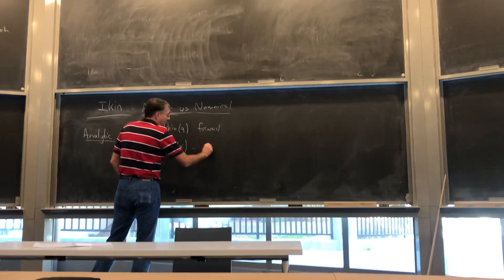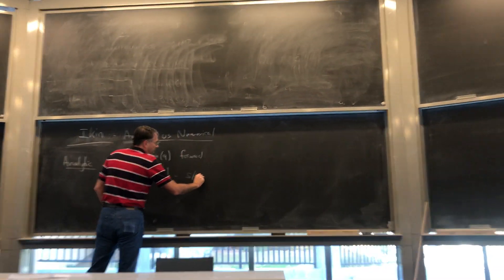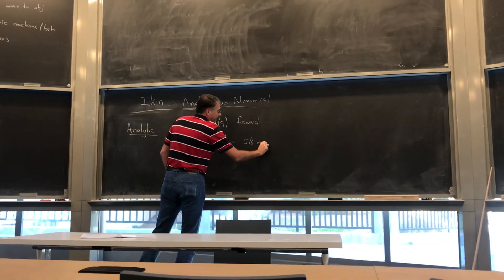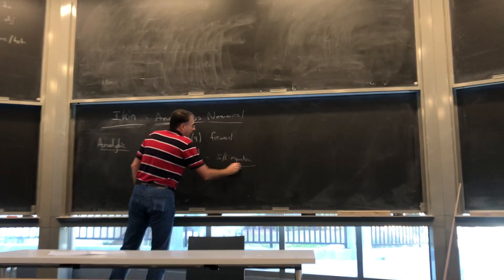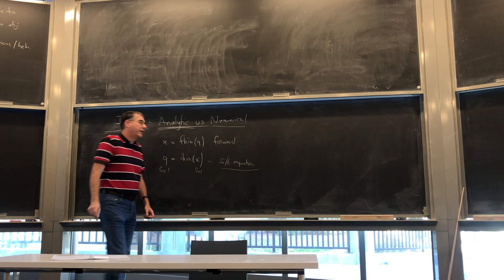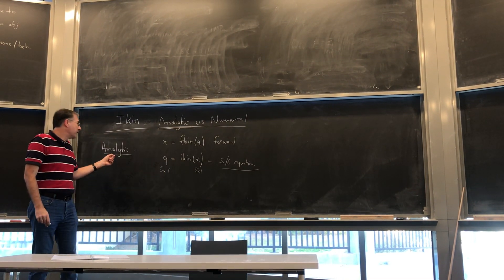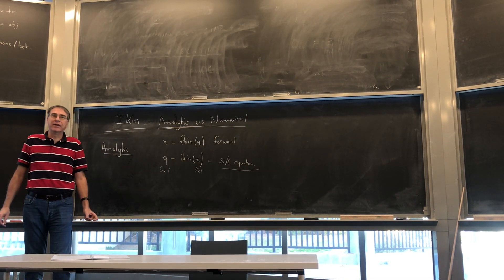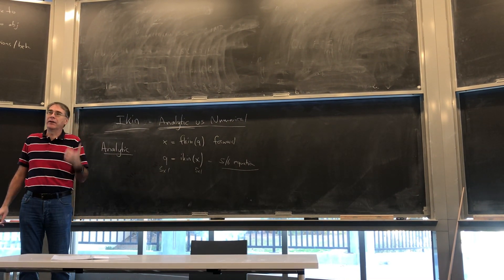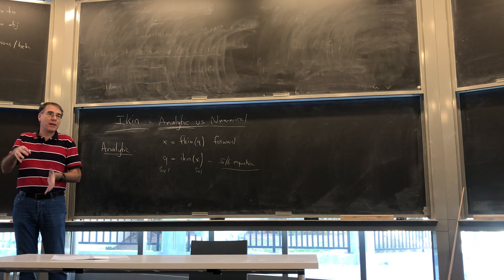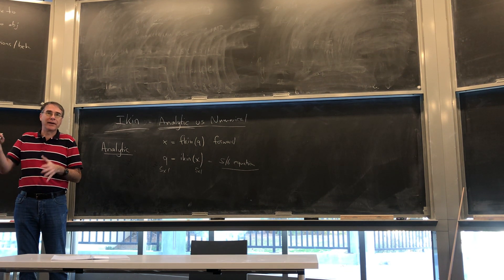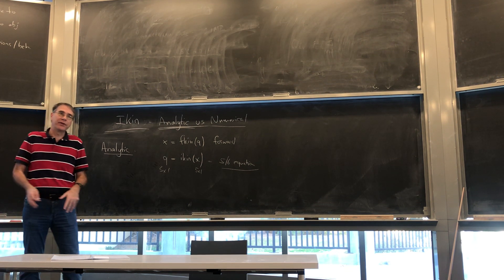Basically, 5-6 equations. So, the key to doing analytic IK is basically divide and conquer. Break the system into subsections that you can then look at triangles and geometry and solve.